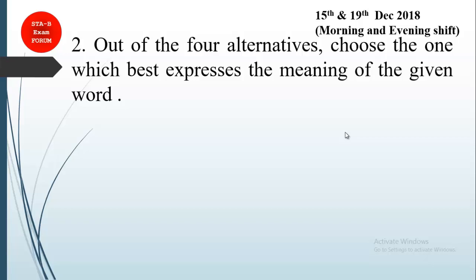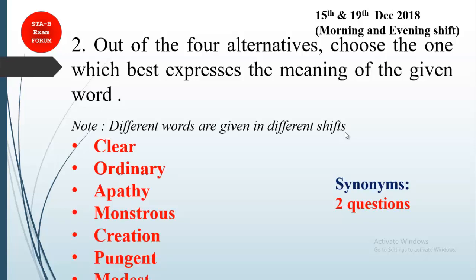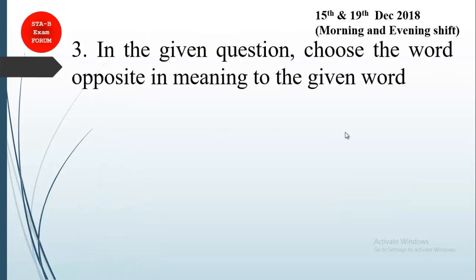Accordingly you can prepare your comprehension section of English language. Coming to the next: out of four alternatives, choose one which best expresses the meaning of the given word — this is synonyms. You are seeing eight synonyms here but only two will be asked in the exam. The synonyms asked in different shifts are: clear, ordinary, apathy, monstrous, creation, and pungent.